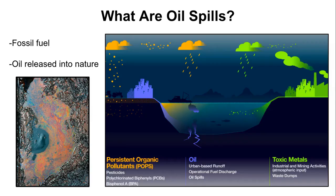What are oil spills? To understand this, first we must understand what oil is. Oil is a fossil fuel formed from the remains of ancient marine plants, algae, and bacteria. Once harvested, it is refined into commonly used chemicals and fuels.